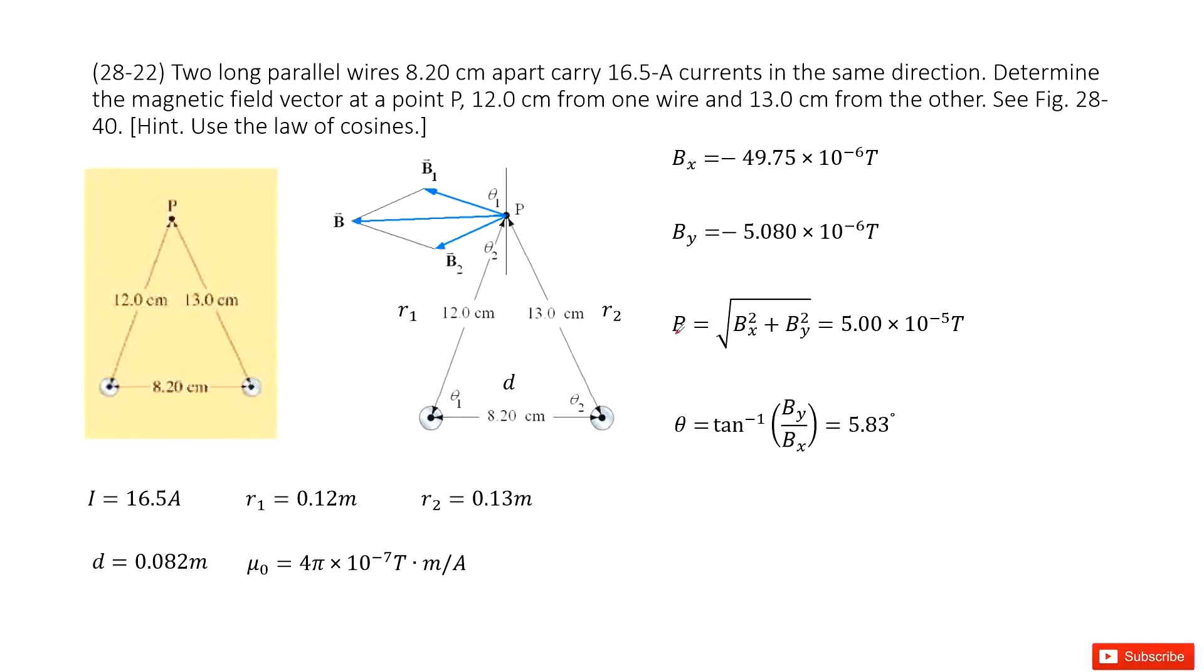Finally, we can get the net magnetic field magnitude as square root of Bx squared plus By squared. Answer is there. And the angle theta. Thank you.